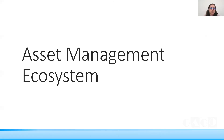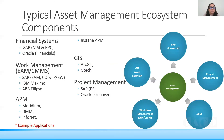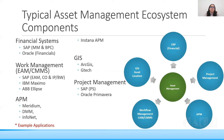The asset management ecosystem components include financial systems, geographical information systems, work management, asset performance management, and project management tools. Financial systems commonly used are SAP or Oracle. Work management systems include EAM — enterprise asset management — with popular tools like IBM Maximo and ABB Ellipse. GIS tools include Argo and Gtech. Project management uses SAP and Oracle Primavera. APM tools include Meridian, DMM, and Infonet.